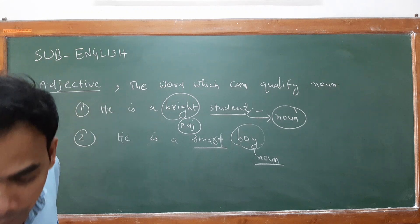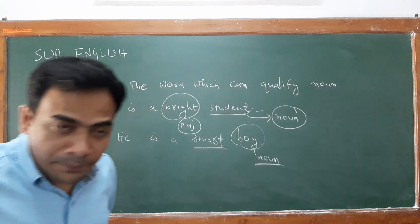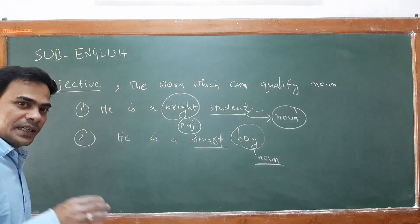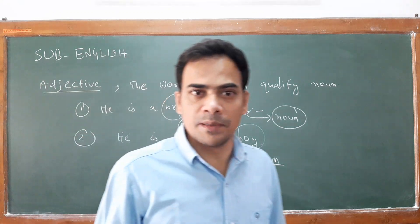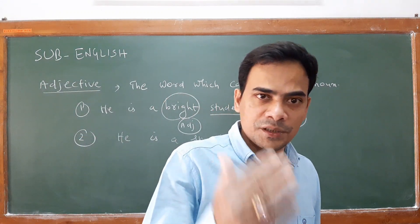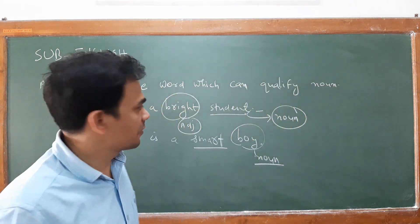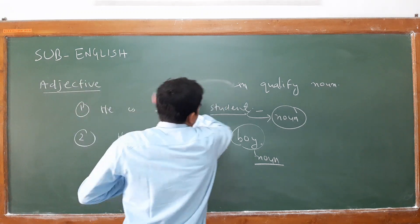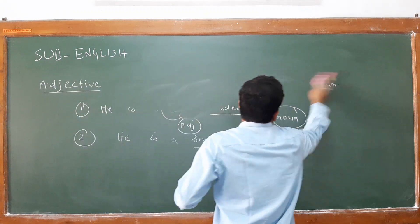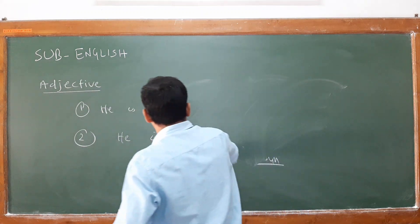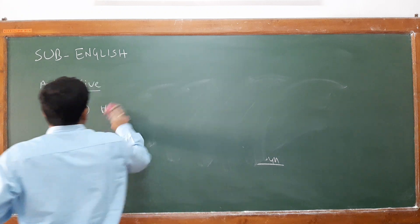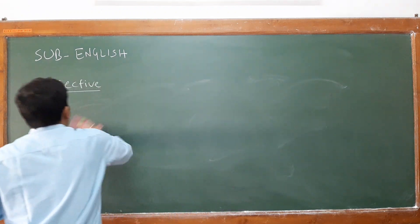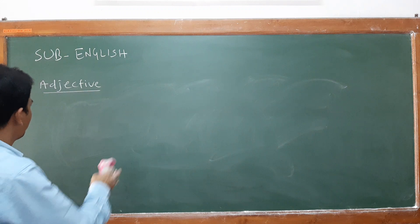Now let us study the different forms of adjectives. We have the comparison of adjectives: positive, comparative, and superlative. Let us study the three different forms and categorize them.